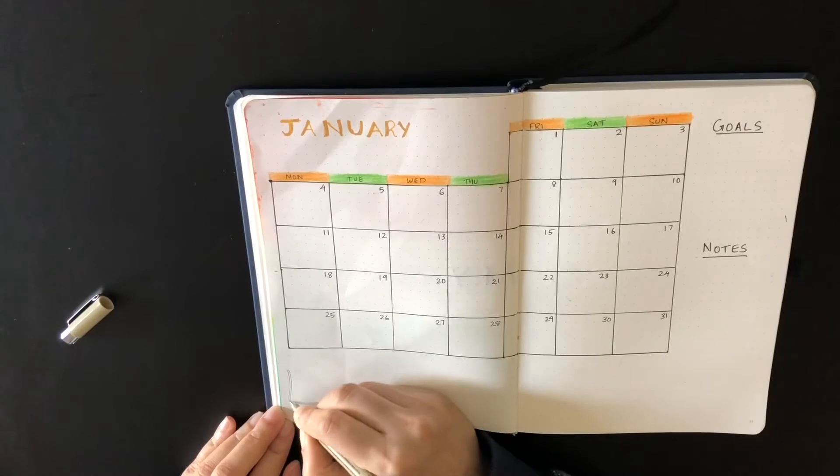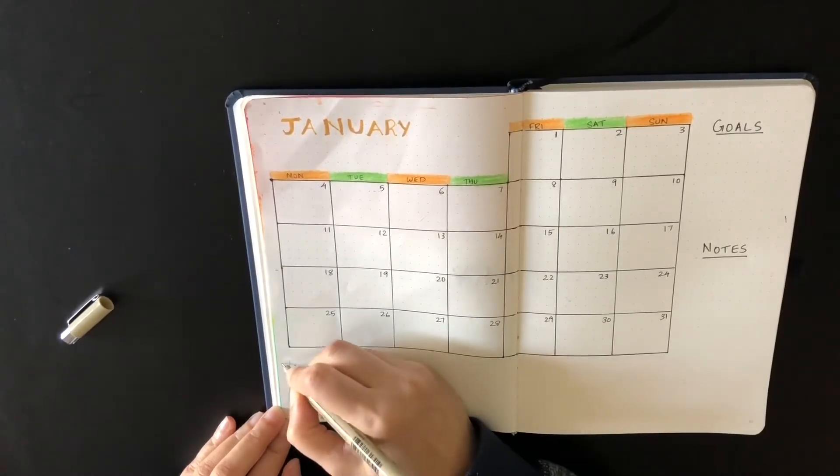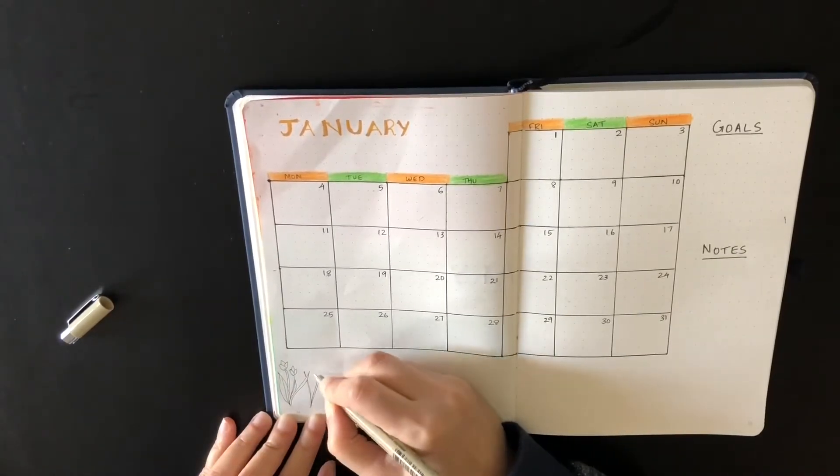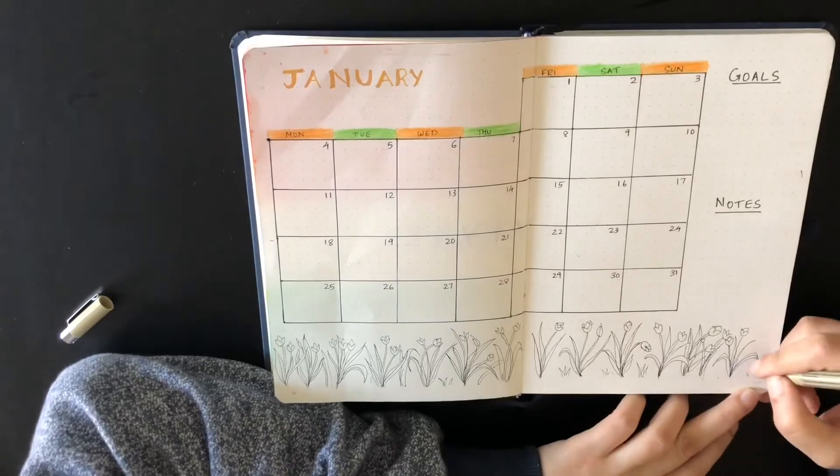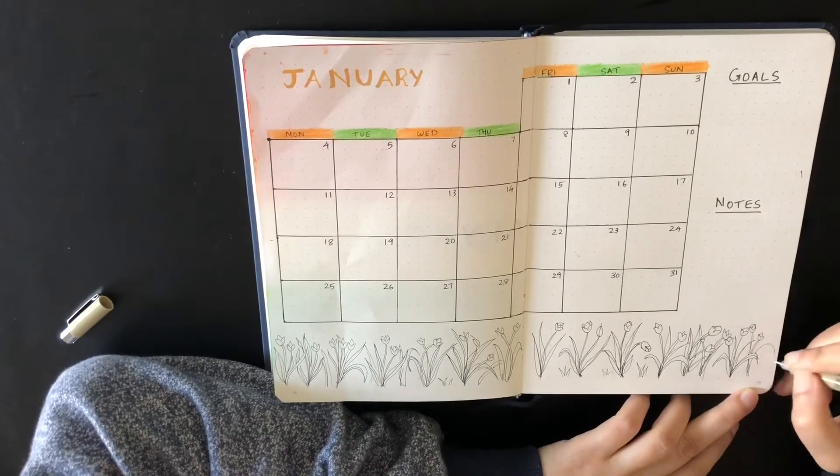I decided to doodle tulips at the bottom and give them the theme colors—green for the leaves and orange flowers. This is the first time I'm doodling or coloring my bullet journal spreads. Usually, I use colors just to highlight or visually segregate tables.